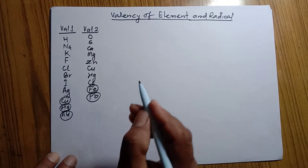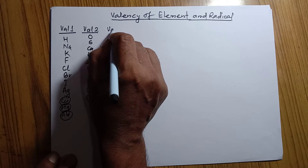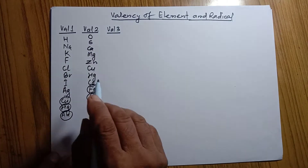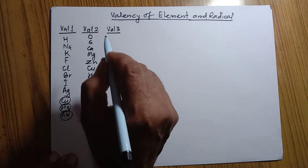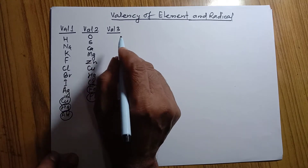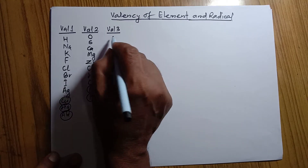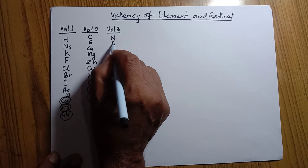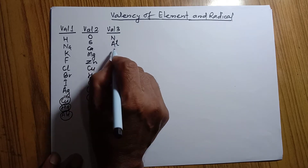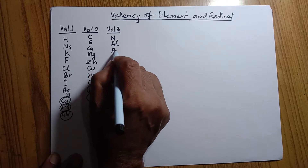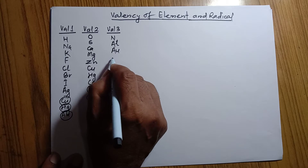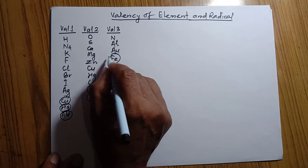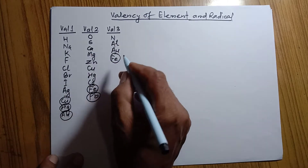Now, the elements having valency 3. What elements have valency 3? Nitrogen has valency 3, aluminium has valency 3, gold also has valency 3, and iron has also valency 3. These elements have valency 3.